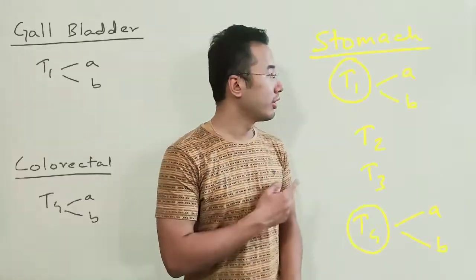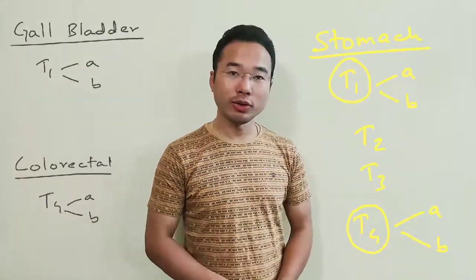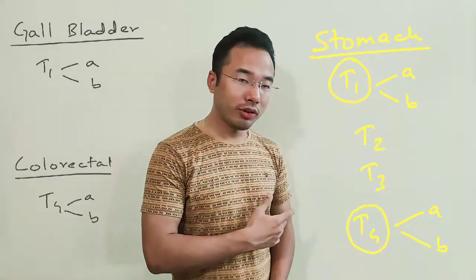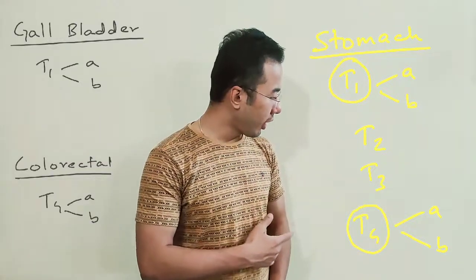The stomach is the biggest among these three organs, so it gets subdivisions in both T1 and T4. It has T1a, T1b, T2, T3, T4a, and T4b.